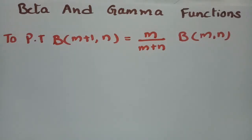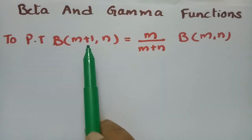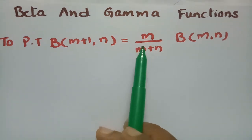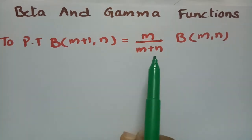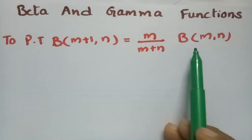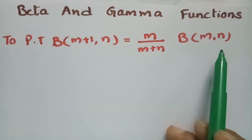This video is about beta and gamma functions. We have to prove that beta of m plus 1 comma n is equal to m by m plus n into beta of m comma n.